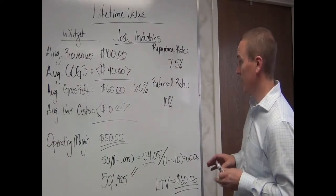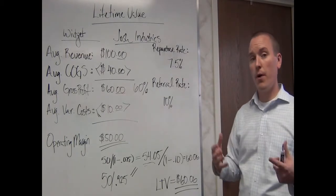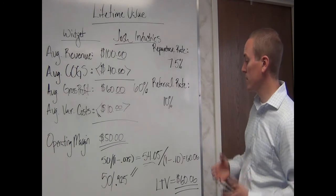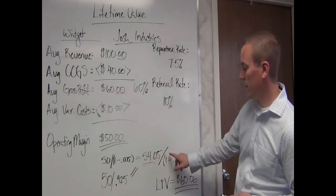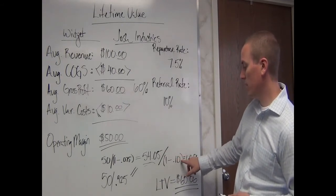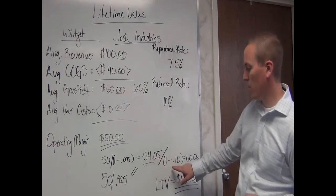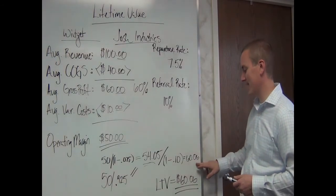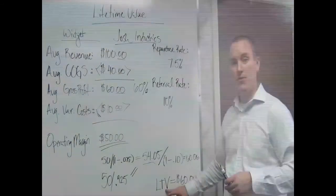Now I'm going to do the same thing with the client referral rate. About 10% of my business comes from client referrals, so I'm going to take $54.05 and divide it by 1 minus 10%, or 0.10 — that's the same as dividing by 0.9. Either way, I get $60.06. $60.06 is my LTV, or my lifetime value.